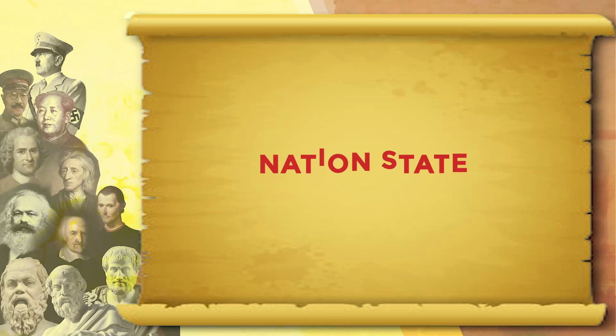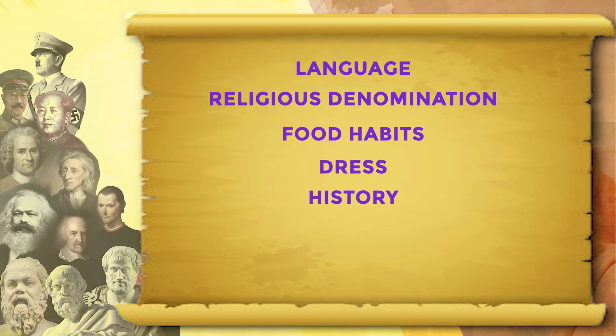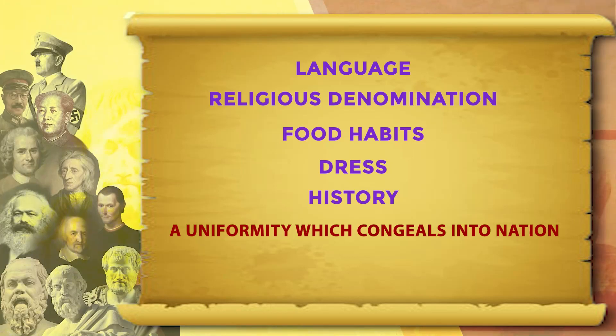The state is now a nation state based on nationality — same language, same religious denomination, same food habits, same dress, same history, same collective memory. A uniformity congeals into a nation, which then has political power as a nation state. After the French Revolution, the nation state is totally based on the concept of republic. In this nation state, not only the free citizens but even the proletariat, the bourgeoisie, the lower classes, everybody has political power and the right to vote.